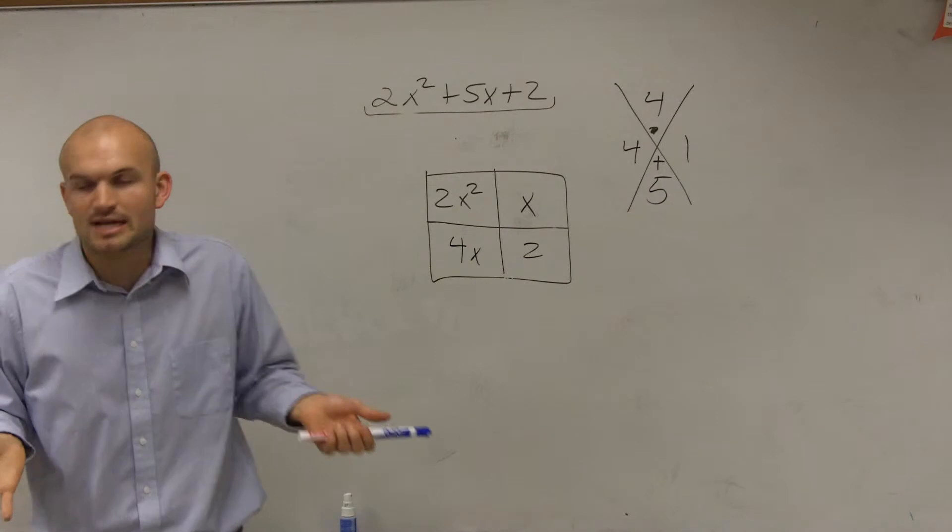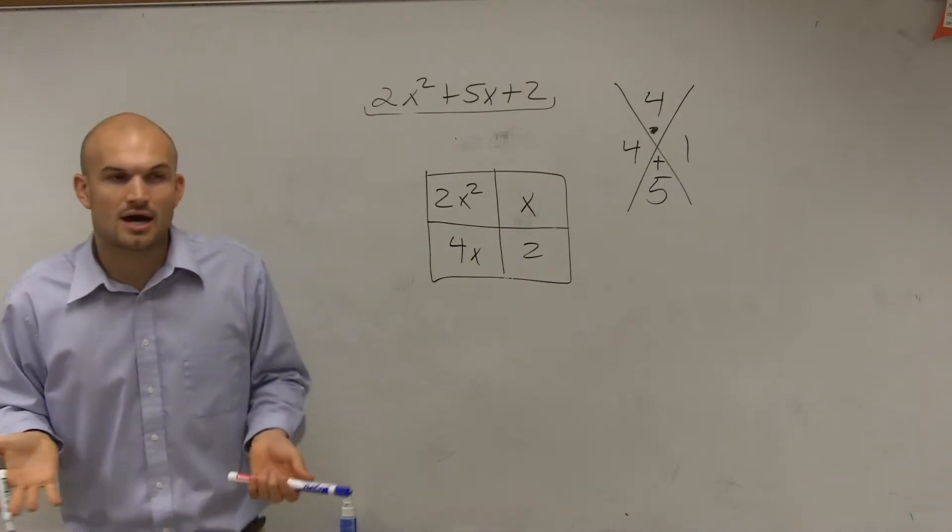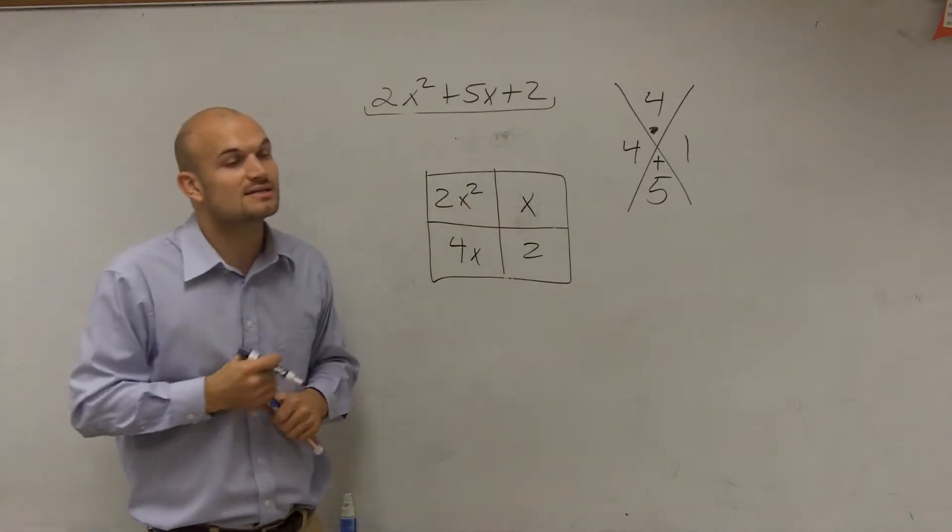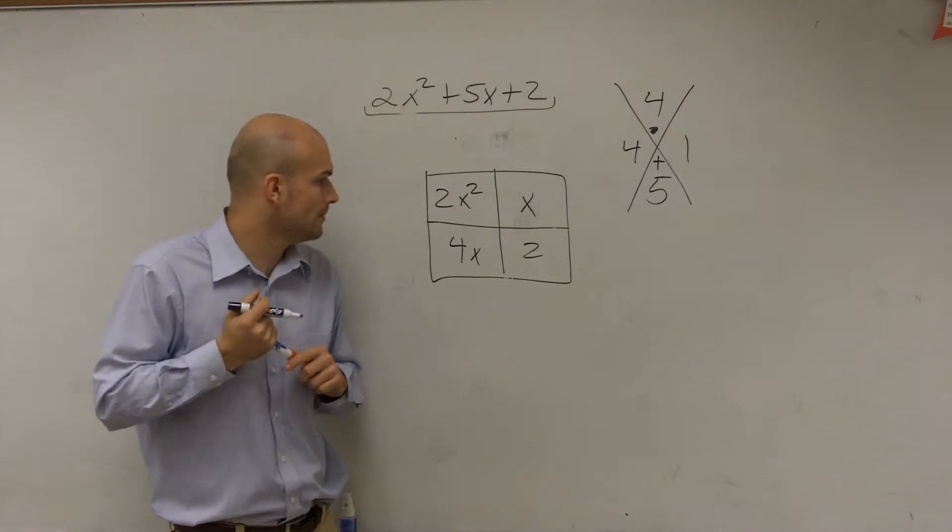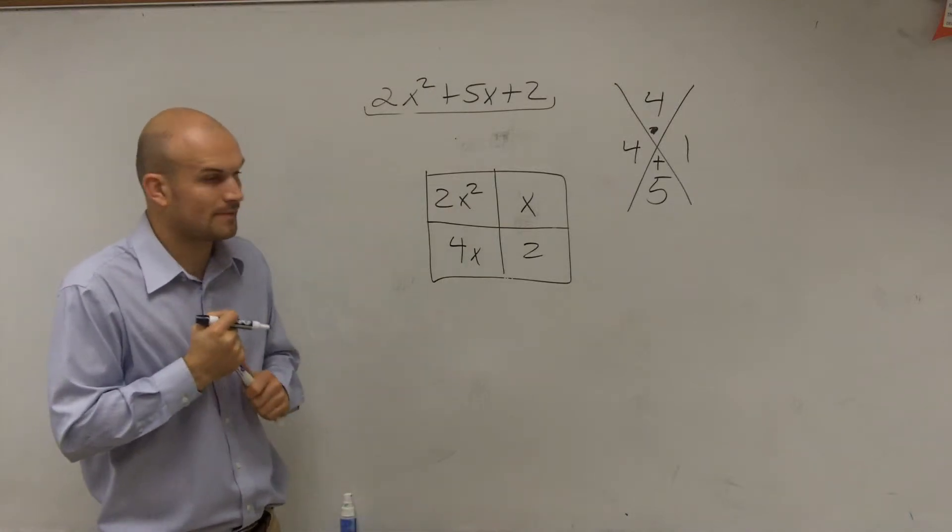Instead of writing 5x in both boxes, I can use 4x and 1x. Because what's 4x plus 1x? 5x. So it's just like that grouping we did, but it's just a way to represent it. Does it matter where you put the x and where you put the 4x? Nope, either way would work.